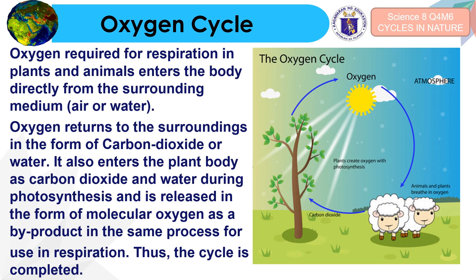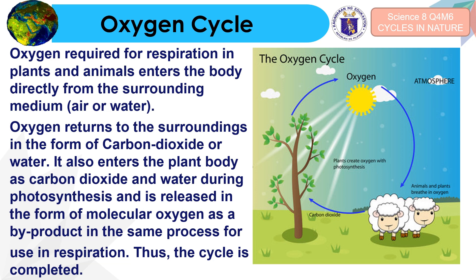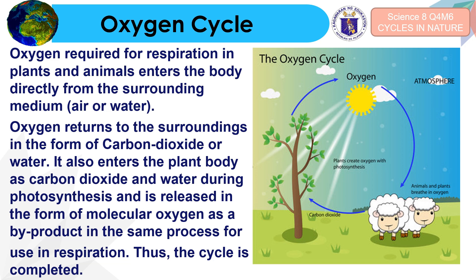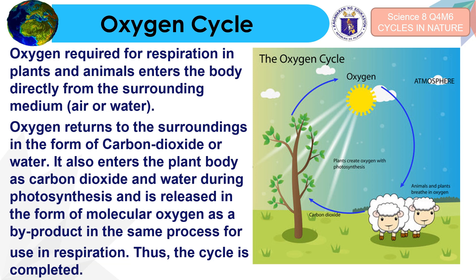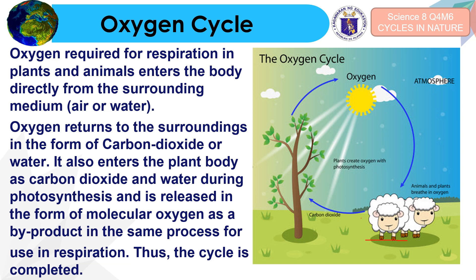Let's take a look at the oxygen cycle. Oxygen is very important to both plants and animals since it is required for respiration. It enters the body directly from surrounding mediums such as air or water. Oxygen returns to the surroundings in the form of carbon dioxide or water. It enters the plant body as carbon dioxide and water during photosynthesis and is released as molecular oxygen, which is utilized by animals and humans for respiration. Thus, the cycle is completed.